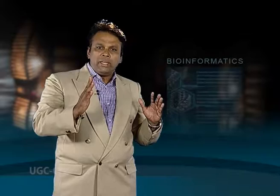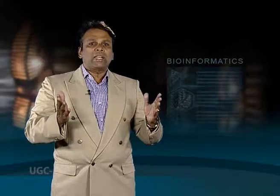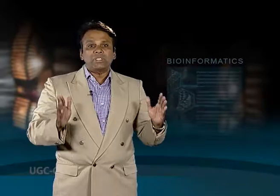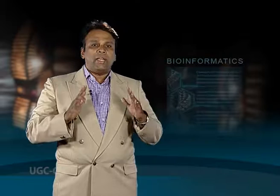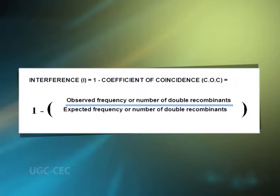Interference is quantified by first calculating a term called the coefficient of coincidence, which is the ratio of observed frequency of double recombinants to expected double recombinants, subtracted from 1. Hence, the degree of interference is defined as: interference equals 1 minus the coefficient of coincidence. Coefficient of coincidence equals observed frequency or number of double recombinants divided by expected frequency or number of double recombinants.